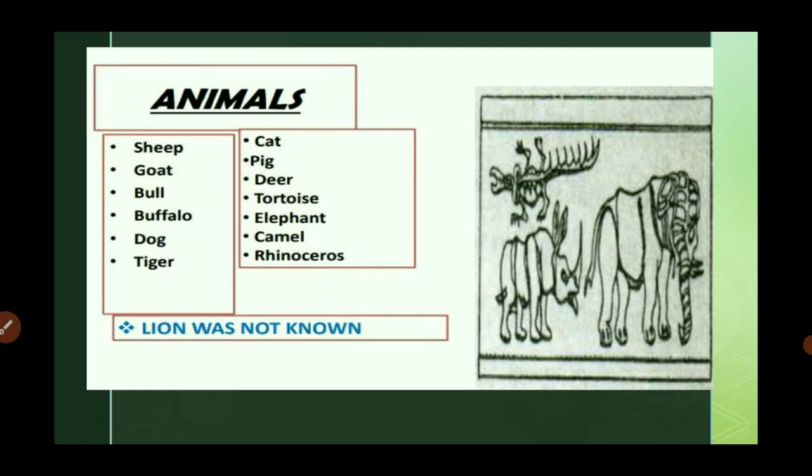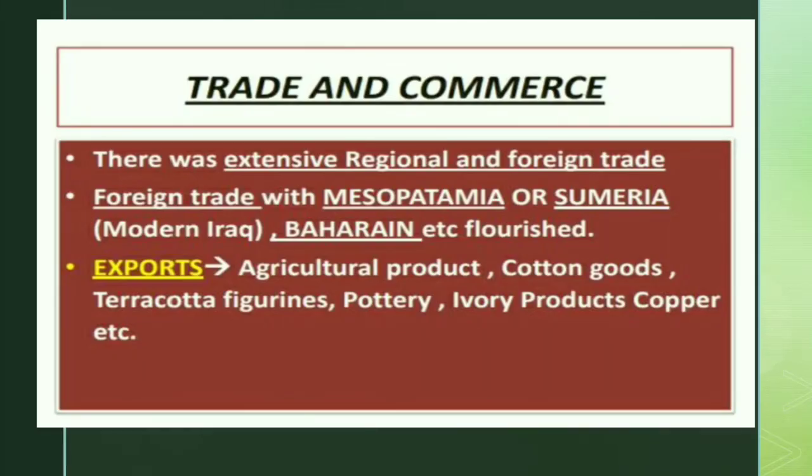The lion was not known to the Indus Valley people at that time. Known animals included sheep, goat, bull, buffalo, dog, tiger, cat, pig, deer, tortoise, elephant, camel, and rhinoceros.